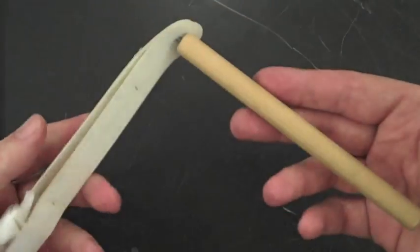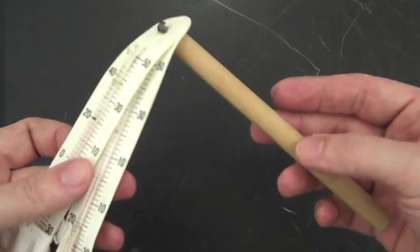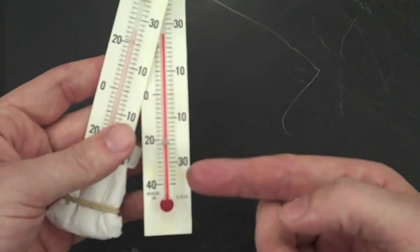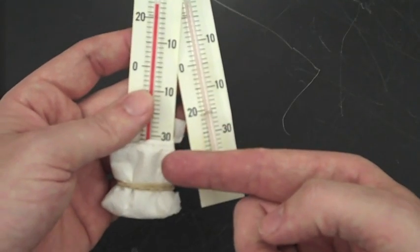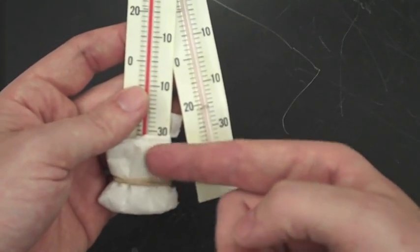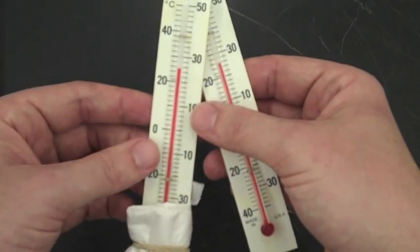A sling psychrometer is an instrument that meteorologists use. There are basically two thermometers, one's called the dry bulb, one's called the wet bulb. You'll notice that there's a sock at the end of the wet bulb thermometer.